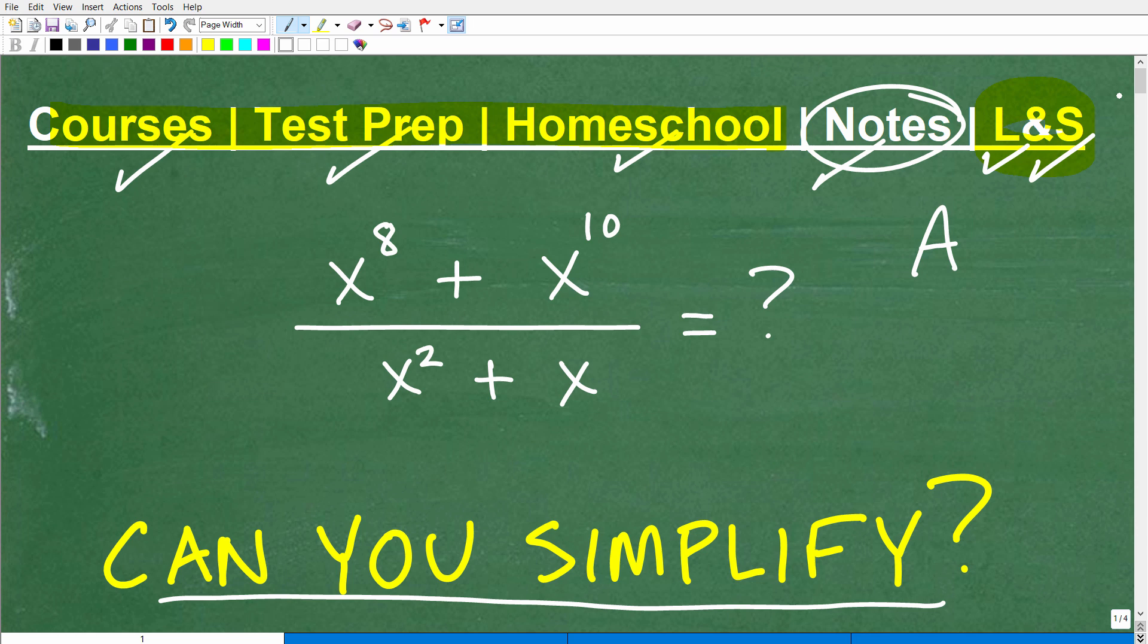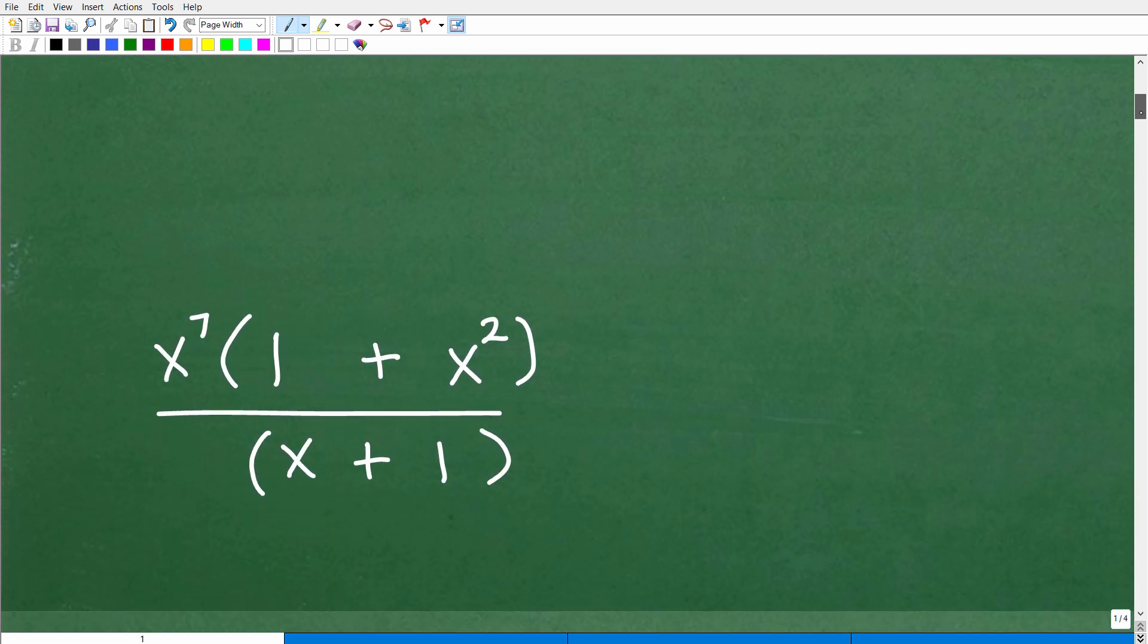Let's go ahead and take a look at the answer to this. Again, it might be a little bit difficult to type into the comment section. But nevertheless, let's go ahead and simplify this expression. And when we do this correctly, this is the answer you will get: x to the 7th times 1 plus x squared over x plus 1.